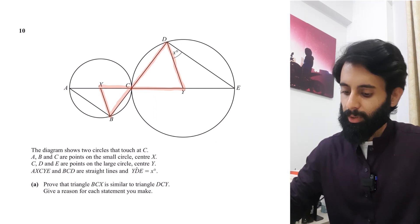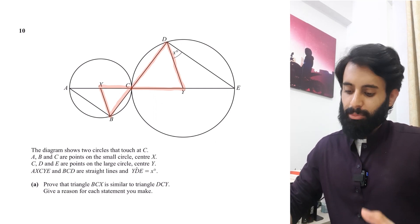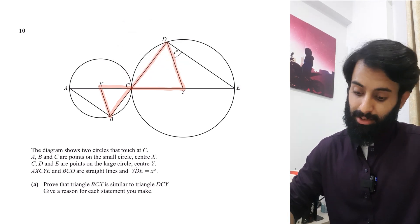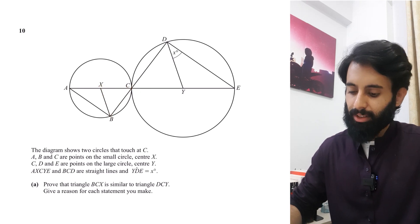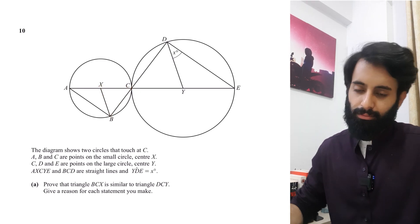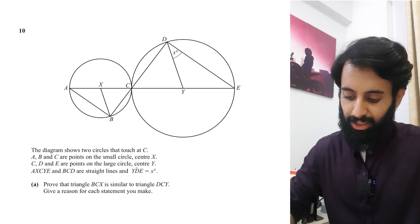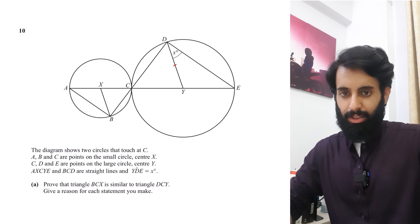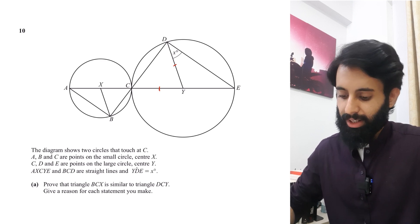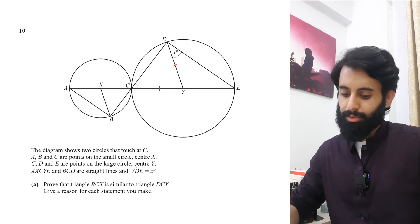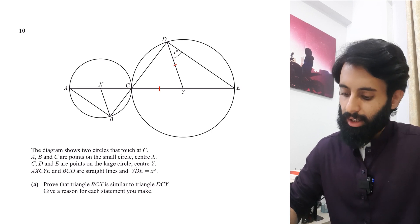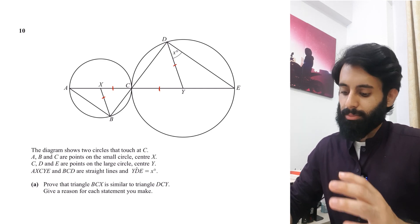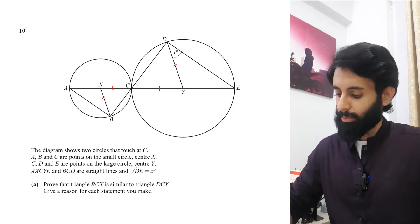These two triangles are going to be isosceles triangles — not just an assumption, but a fact. Y is the center of the large circle, so YD and CY are radii of the large circle. Similarly, XC and XB are radii of the small circle, which means those two sides are definitely equal.